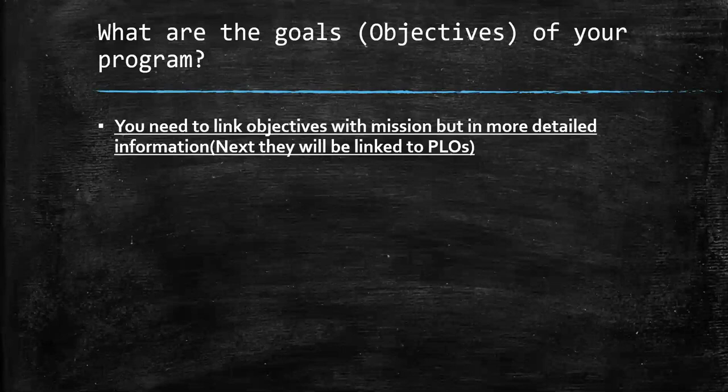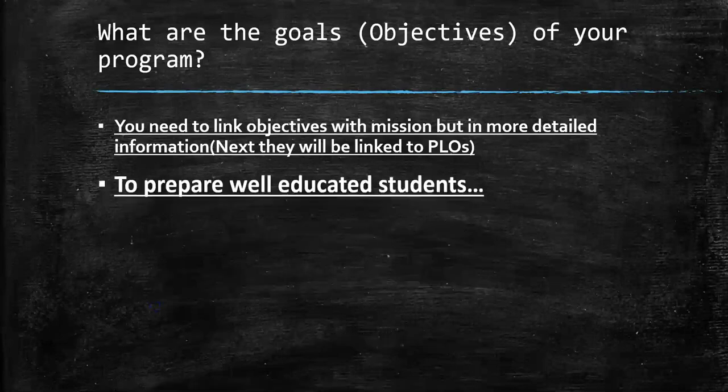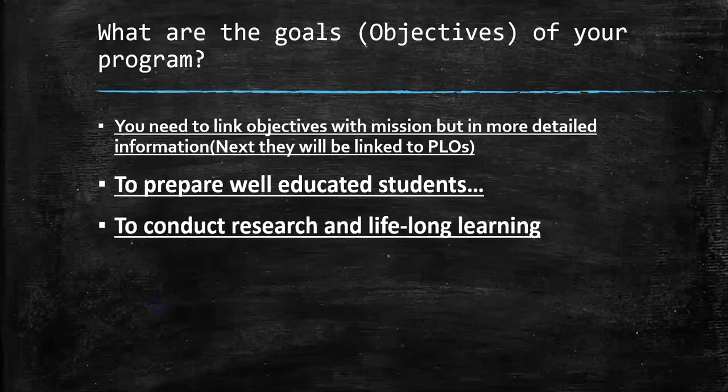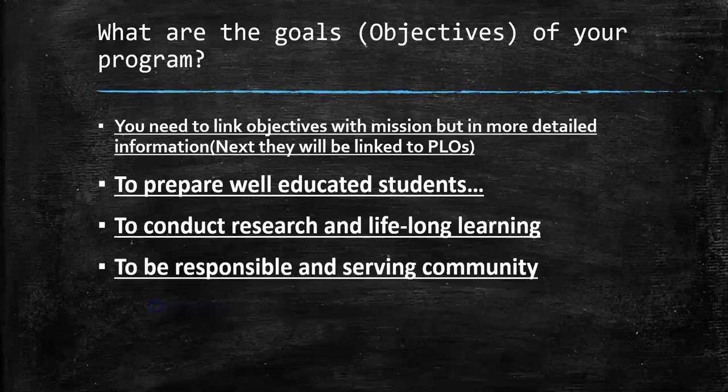To remember your objectives — of course your objectives are extracted from your mission. As an instructor, you should know the program learning outcomes because they are distributed over courses. If you can link all of them together, it will be clear for you to know the mission, objectives, and program learning outcomes. For example: to prepare well-educated students, to conduct research and lifelong learning, and to be responsible and serve the community.